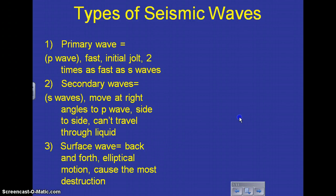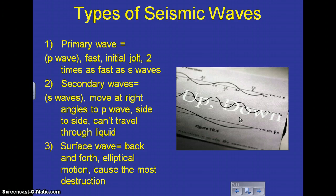A surface wave is a wave that moves back and forth or kind of in a circular motion, an elliptical motion, and these are the types that cause the most destruction. But what you're going to feel first is the P wave, that jolt, and then you'll feel side to side motion, which is secondary waves. And then finally you'll feel surface waves, which are the circular motions, the very destructive kind.